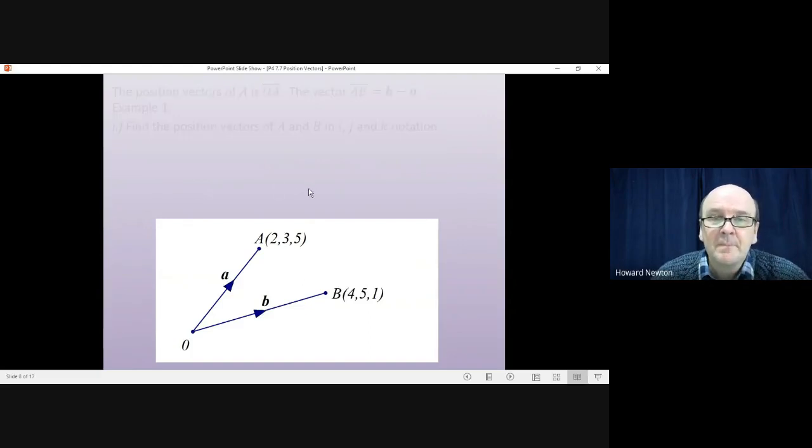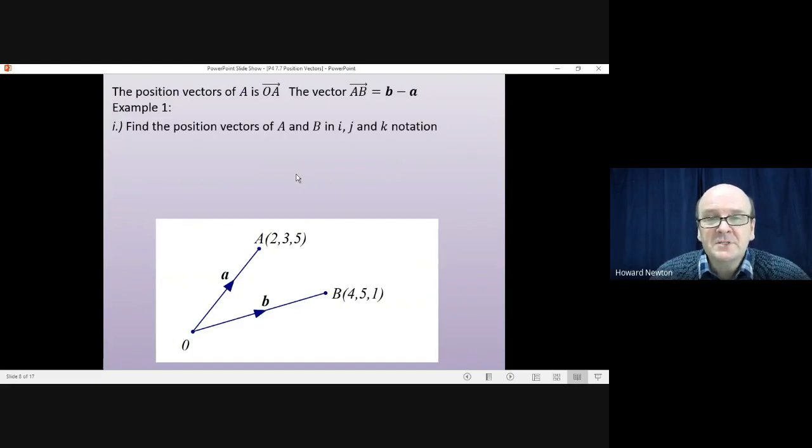OK, let's have a look. So first of all, the position vectors of A and B in i, j and k notation. The position vector of A would be 2i plus 3j plus 5k. And the position vector of B would be 4i plus 5j plus 1k.